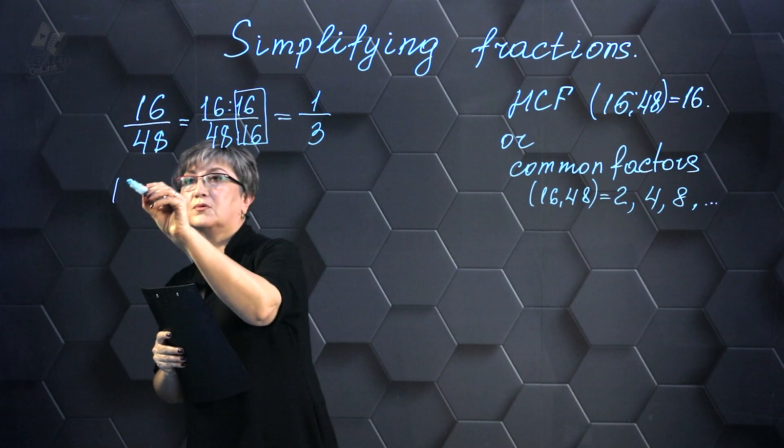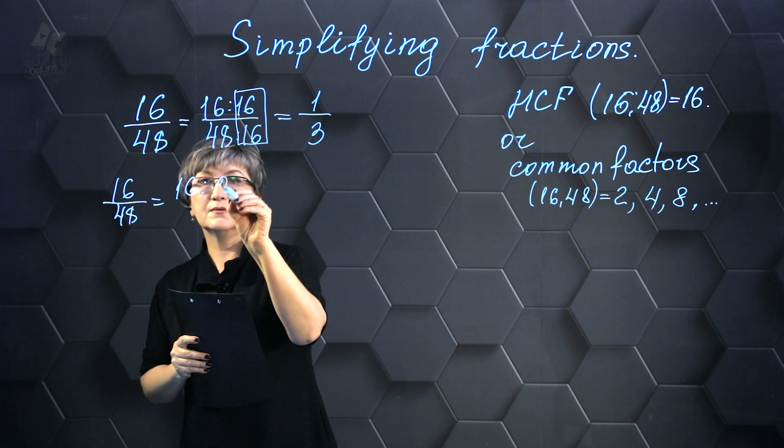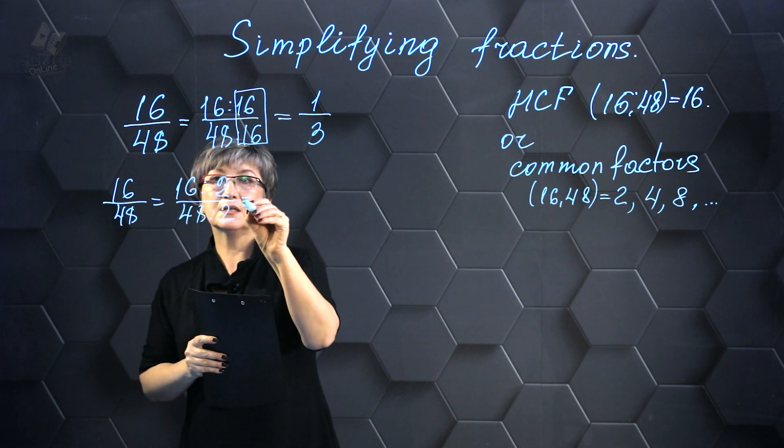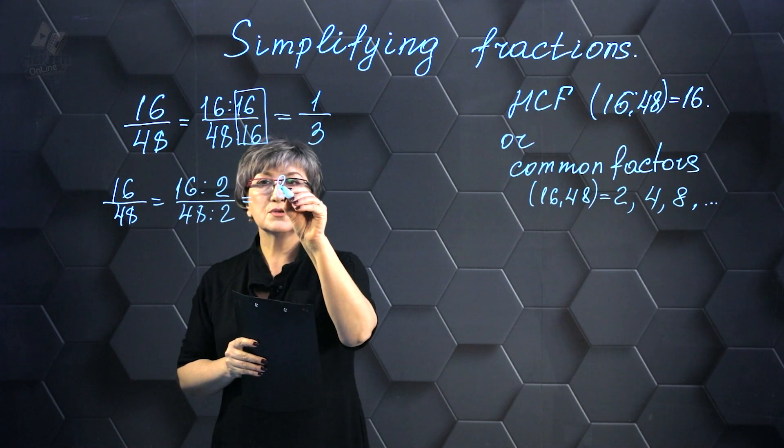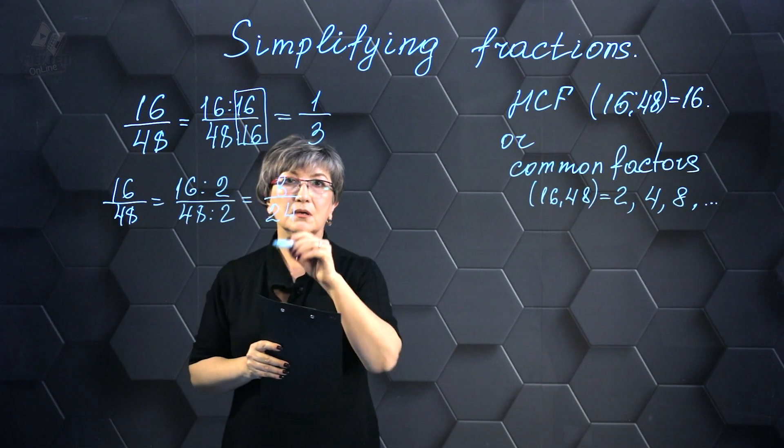Well, let's try. 16 and 48. I divide 16 by 2 and I divide 48 by 2. And then I calculate 16 divided by 2 which equals 8 and 48 divided by 2 which equals 24.